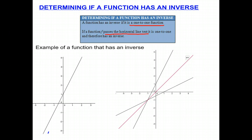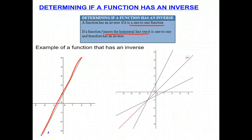Let's look at the example on the left-hand side. We have a graph of a function, and you should be able to see that this function is one-to-one because for every y value, there's a unique x value. It passes the horizontal line test — at y equals four, the horizontal line only intersects the graph in one place at x equals one, and that would be true for every horizontal line. It only intersects the graph in one place, which means for every y, there's a unique x.